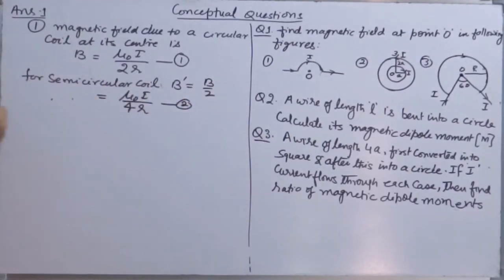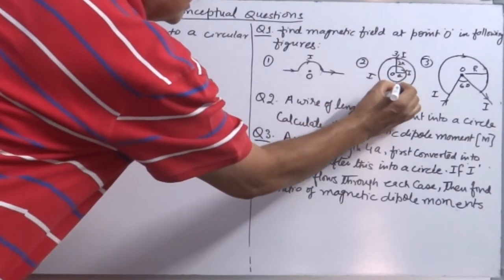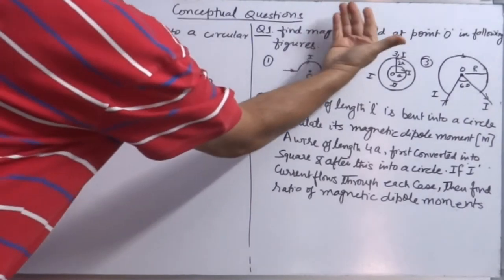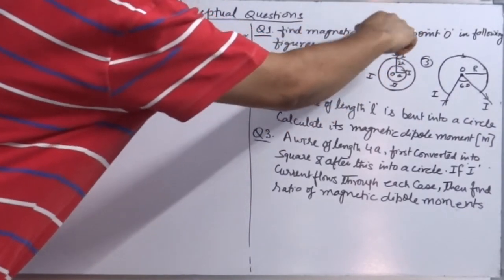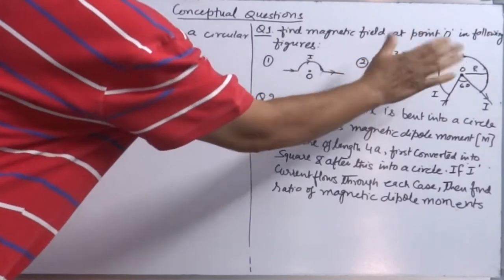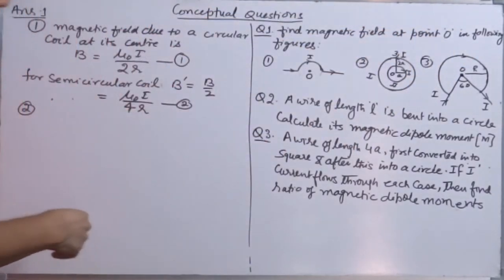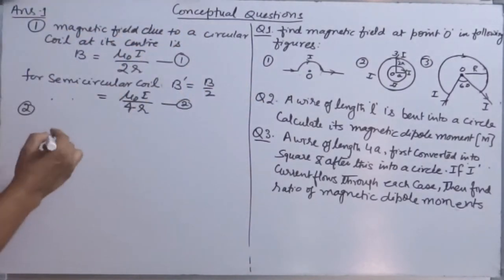In figure 2, there are two coils. I can mark this as first coil, the inner one as second coil. Direction of current is opposite. For the first coil, the magnetic field will be upward. For the second coil, the magnetic field will be downward by using right hand thumb rule.